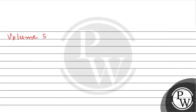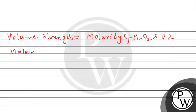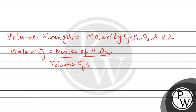Now we need to calculate volume strength. First, we will find the molarity of hydrogen peroxide. Molarity = moles of hydrogen peroxide divided by volume of solution in liters = 0.003 / 0.025 = 0.12 molar.